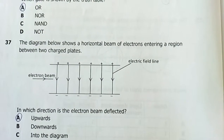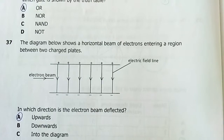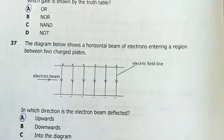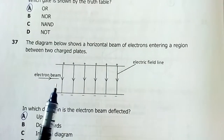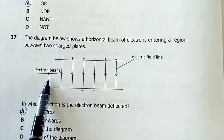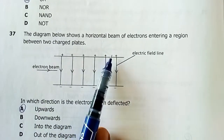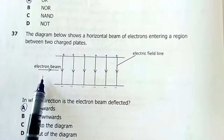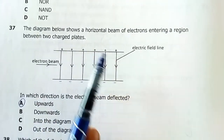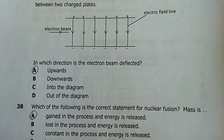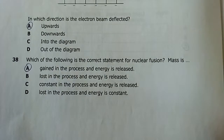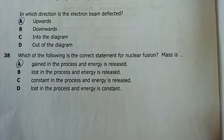Question 37: A horizontal beam of electrons enters a region between two charged plates — negative and positive. Electrons are negatively charged and are attracted to the positive terminal, so they are deflected upwards. Answer is A.